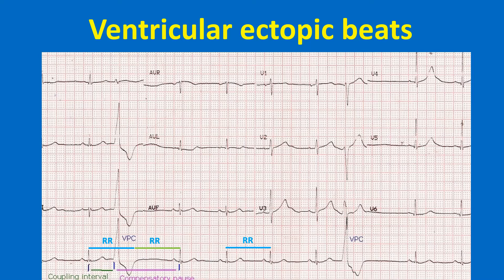The compensatory pause is the interval between the onset of the ventricular ectopic beat and the succeeding sinus beat. The full compensatory pause occurs because the ventricular ectopic beat usually does not reset the sinus cycle. This is because the next sinus discharge would have already occurred before the ventricular ectopic impulse gets conducted up through the atrioventricular node with the usual delay.